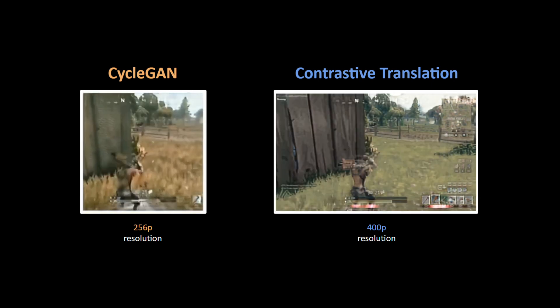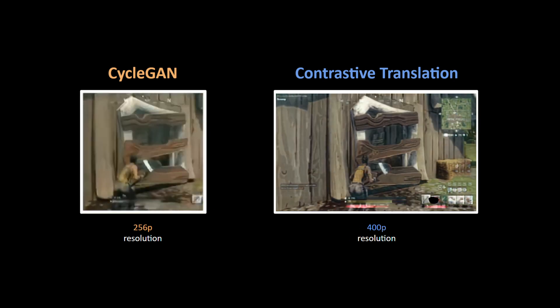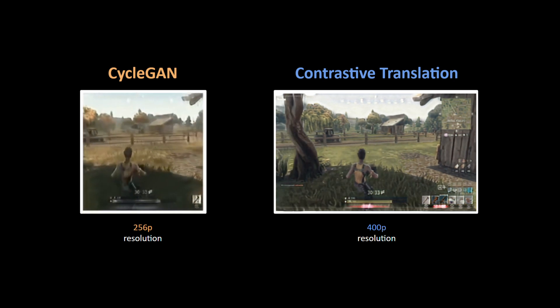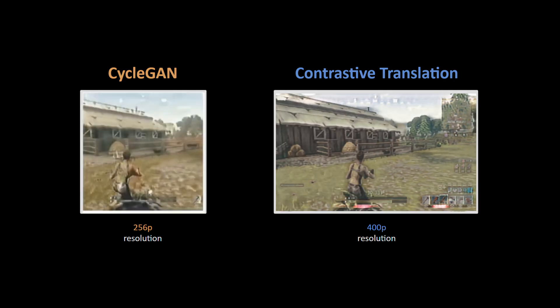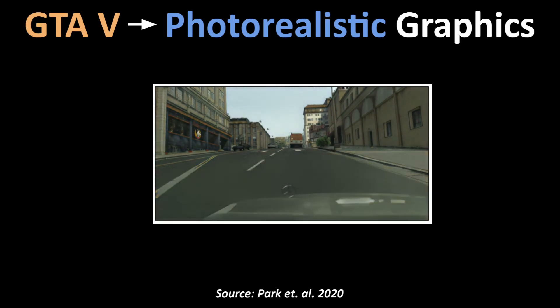This new approach is why the synthesized images with this method have better object separation boundaries and retain more information from the original image after conversion. And all of this comes with reduced GPU requirements, which is fantastic for practical usage. To check out the results of this paper on other datasets, head over to the project page — the link is in the description below.